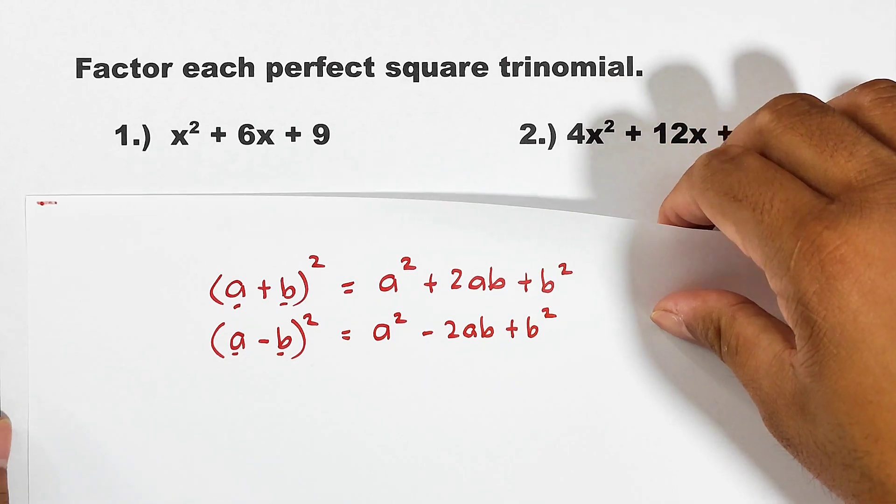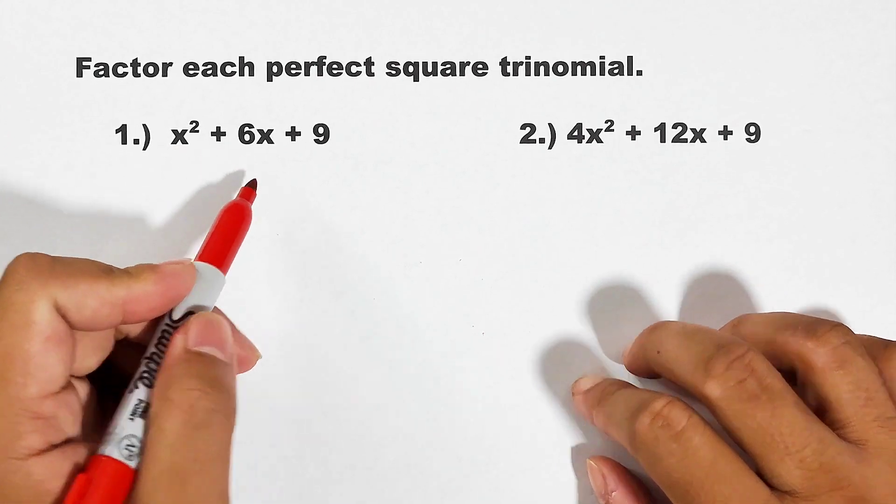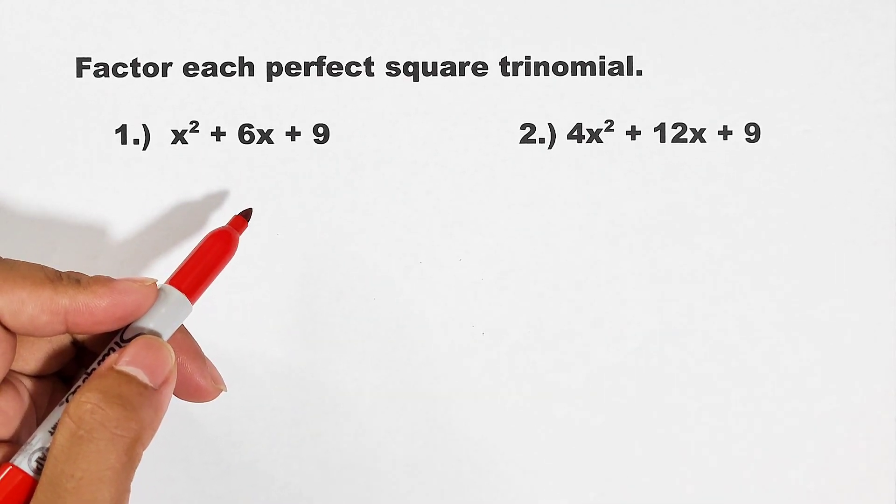Actually, it's a pattern that we have on how to square a trinomial. Now let's start with item number one. For number one, we are given x² + 6x + 9. Now let me show you the way on how to factor it manually.